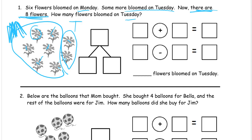Here's our number bond. Our total is how many flowers there are altogether — there are eight. The Monday flowers, there were six. And the Tuesday flowers, that's two more. For the addition number sentence, we take the two parts of the number bond and they become our addends — those are the numbers that we add. Six plus two. You could have written two plus six, that would work. It equals the total because the two put together are the same as eight altogether.